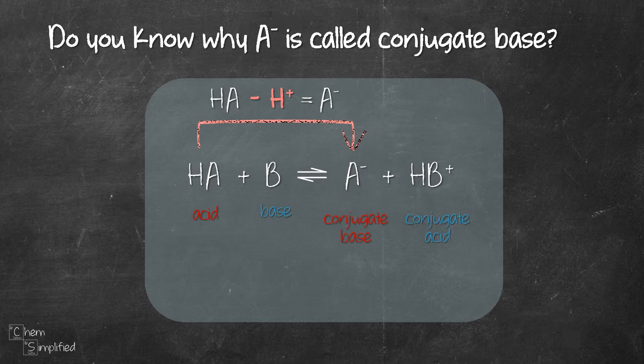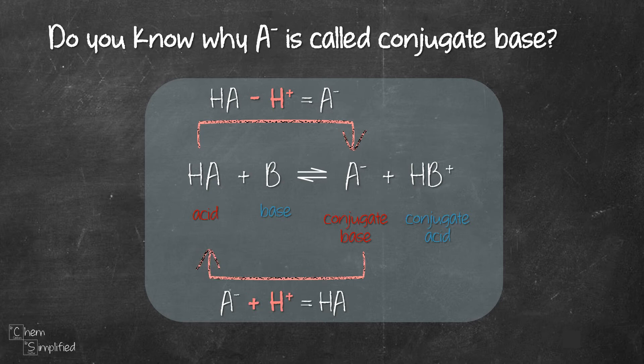Acid base reaction is actually an equilibrium reaction, meaning the reaction can go forward and reverse. So that means A minus can accept proton to become HA again. Since it accepts proton, it's therefore a base. That's why it's called a conjugate base.